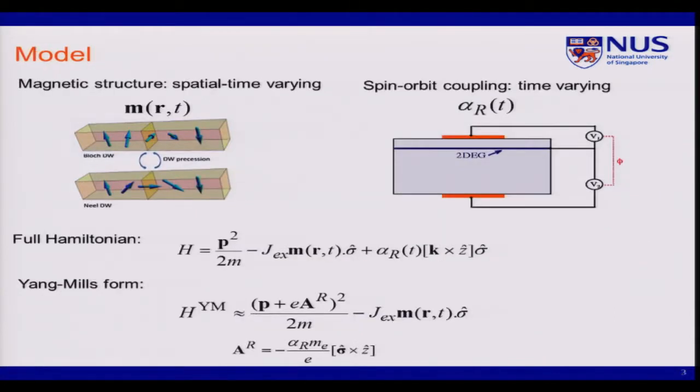So what happens if I introduce the spin-orbit coupling to that magnetic structure? Let's say we got a magnetic domain wall on the left. It is spatial dependence because it's a domain wall. And if we can excite and let the magnetization rotate from the Bloch wall to the Néel wall, we got a spatial time-varying magnetic structure.